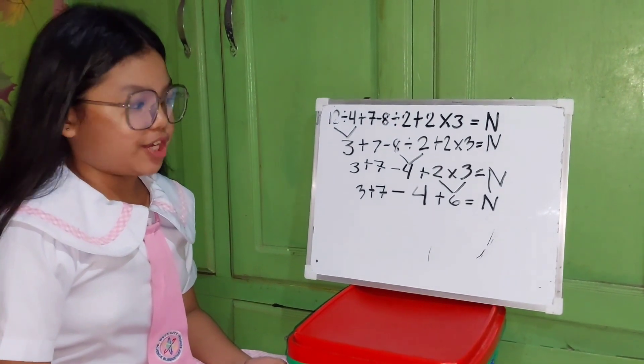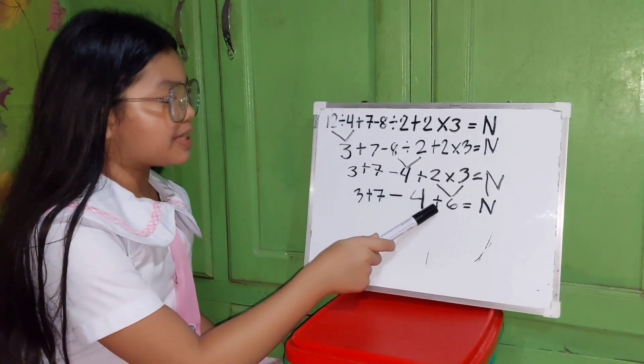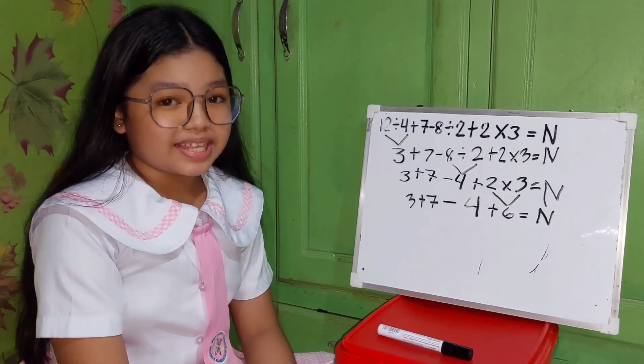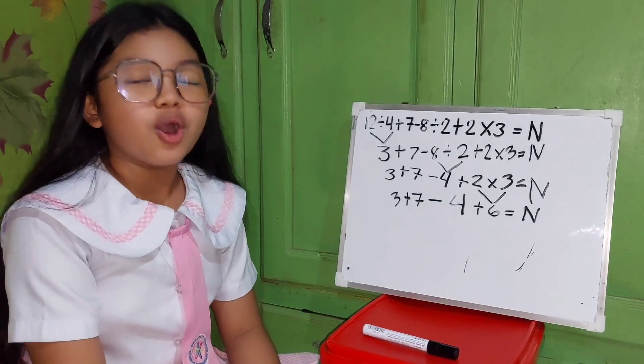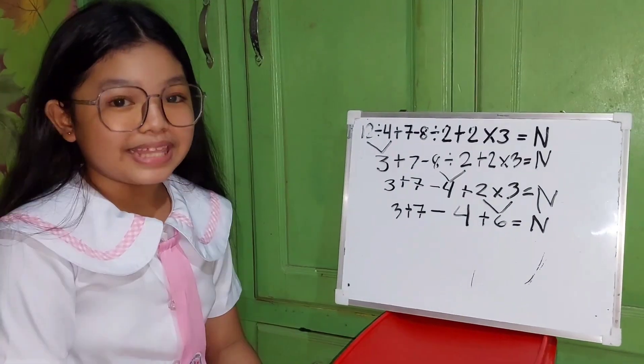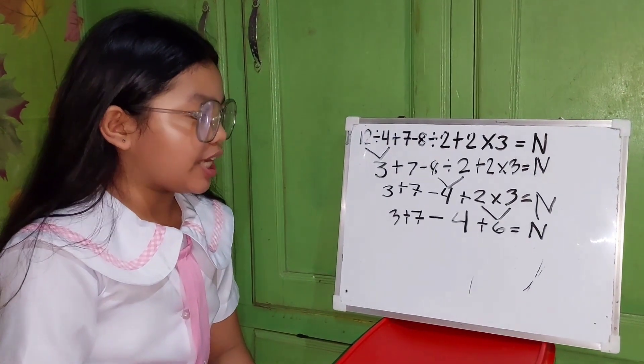Then copy the rest. So we have here: 3 plus 7 minus 4 plus 6 equals n. Then the next rule of MDAS is to add or subtract whichever comes first, also from left to right. Now we will add 3 plus 7. 3 plus 7 equals 10.